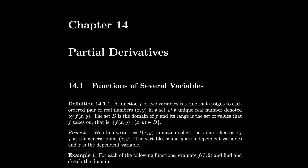Chapter 14, Partial Derivatives. Section 14.1: Functions of Several Variables. A function f of two variables is a rule that assigns to each ordered pair of real numbers x, y in a set D a unique real number denoted by f(x, y). The set D is called the domain of f, and its range is the set of values that f takes on — that is, the set of f(x, y) such that (x, y) is in the domain D. We often write z = f(x, y), similar to y = f(x), to make explicit the value taken on by f at the general point (x, y). The variables x and y are independent variables, and z is the dependent variable.